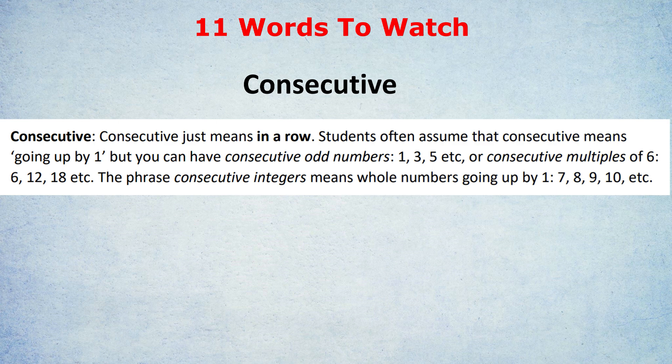There's something I want to clarify about the word consecutive. It means in a row. It doesn't necessarily mean going up by one, which is what some people think. Yes, if it uses the phrase consecutive integers, it means going up by one. So, for example, minus three, minus two, minus one, zero are consecutive integers.